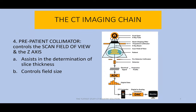Number four, the pre-patient collimator. The pre-patient collimator controls the scan field of view as well as the Z-axis. The scan field of view is the area within the rectangle of exposure — for example, in the abdomen, ranging from the xiphoid process to the pubic symphysis, and from lateral border to lateral border. That essentially is the area exposed when the CT tube turns in a helical arc around the patient's body. The other dimension is the Z-axis, controlled by way of slice thickness. So the pre-patient collimator controls the scan field of view and is also used to control the Z-axis by controlling slice thickness.